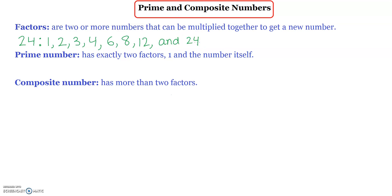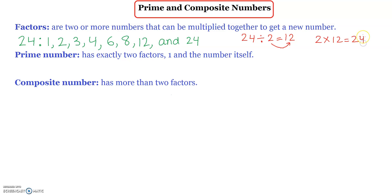The factors of a number each divide the number evenly. For example, if I do 24 divided by 2, I get 12 as a whole number. Or the other way around, 2 times 12 will give you 24. So I have to think about the times table in which 24 appears. That is what factors are.